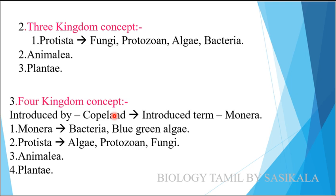The Four Kingdom Concept includes four categories: animals, plants, living organisms, and Protista. It separates these into four kingdoms — Protista is still one of them, along with Fungi, Animalia, and Plantae.